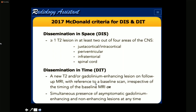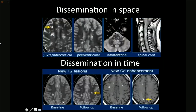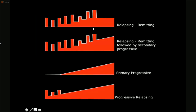Dissemination in time requires a new T2 lesion on a follow-up scan compared to a baseline, or new gadolinium-enhancing areas in a new scan. On radiology reference systems, the four different types of multiple sclerosis are well explained: relapsing-remitting, followed by secondary-progressive, where symptoms relapse and repeat in the same pattern and then show an abrupt increase.